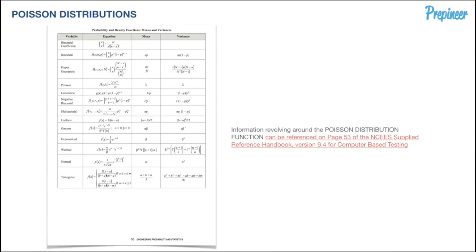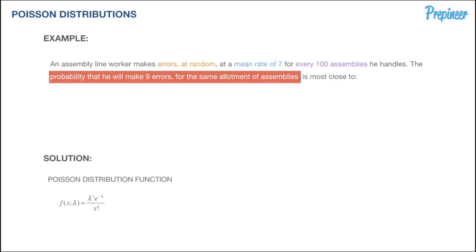We hop back to page 53 of our NCES supplied reference handbook—again, that's version 9.4. If you're looking at any other version it may be a different page, but there will be a table showing all the probability density functions you'll need to know come exam day. Specifically, we're just worried about the Poisson.